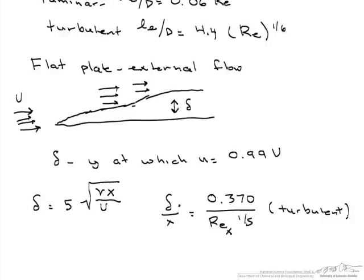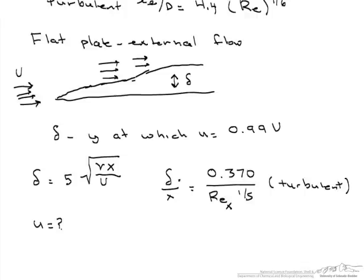Sometimes we would like to know what the velocity is. So we want to find out what that u is. In order to determine that, the Navier-Stokes equations were simplified taking into account boundary layer properties such that v is very much less than u, and d/dx is very much less than d/dy.